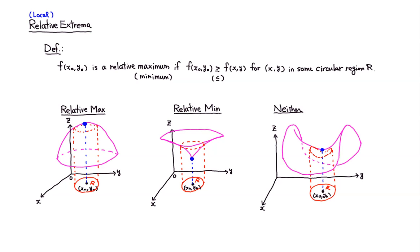All right, let's look at the relative extrema. You can also call it a local extrema. So here's the definition. We say f(x₀, y₀) is a relative maximum if f(x₀, y₀) is greater than or equal to f(x,y) for all points (x, y) in some circular region R. So that's for the maximum.